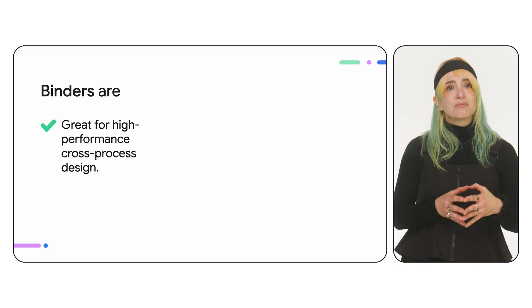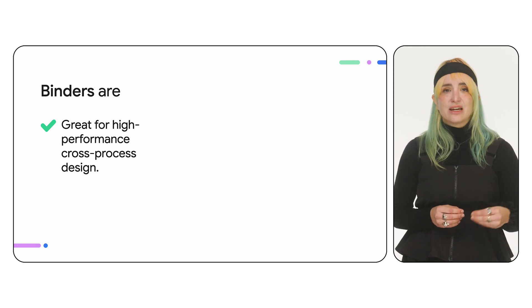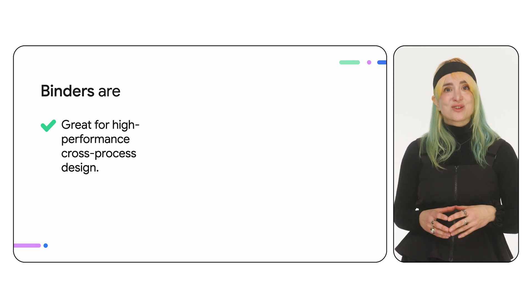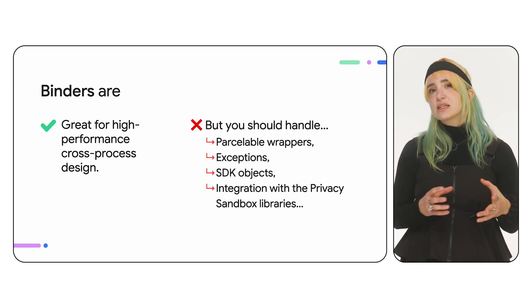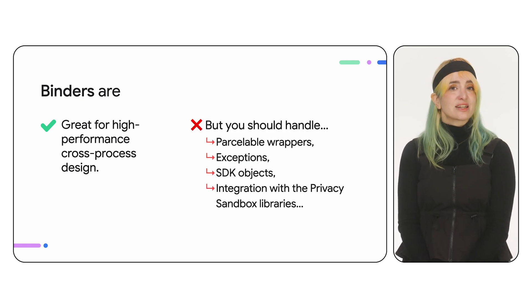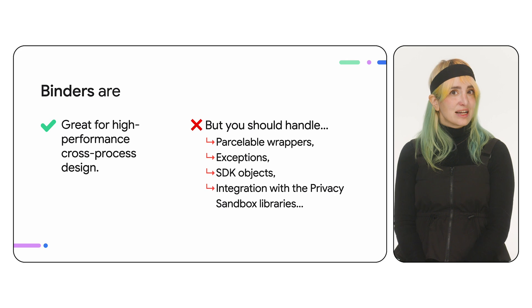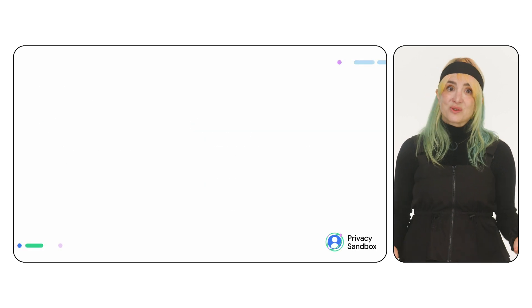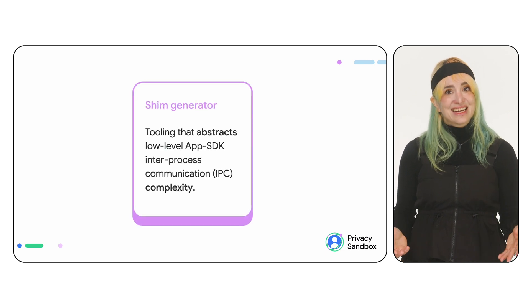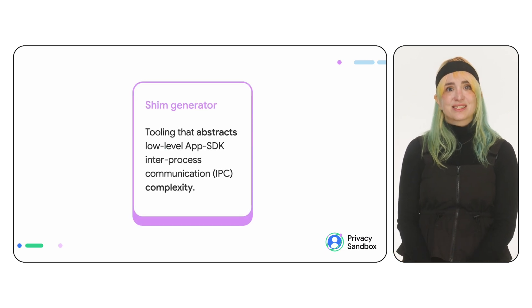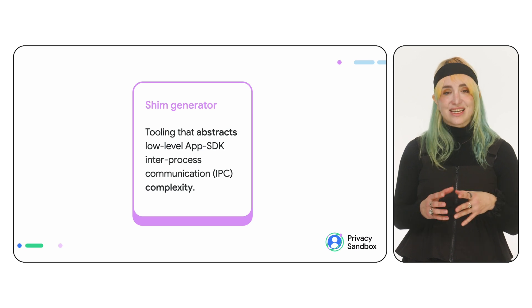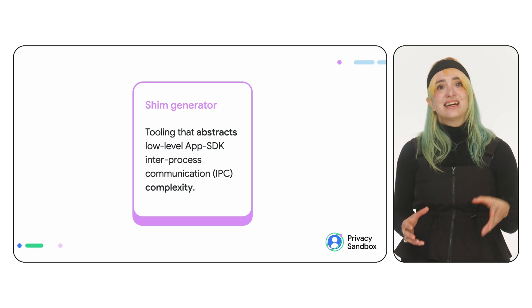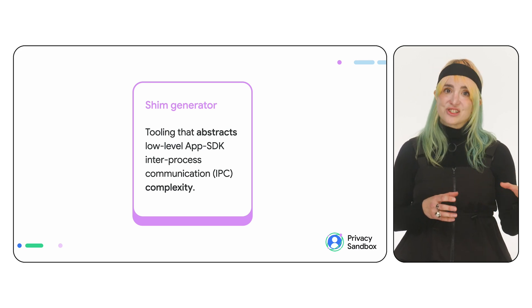Now for the second question — as a binder? Binders are great. They are one of the main blocks for IPC design, with benefits in memory management and safety. But using them directly would introduce design complexities and require you to build a significant amount of boilerplate code. The solution is the shim — that is, the shim generation libraries. This is the low-level app-SDK or SDK-SDK IPC complexity that the shim is here to abstract.